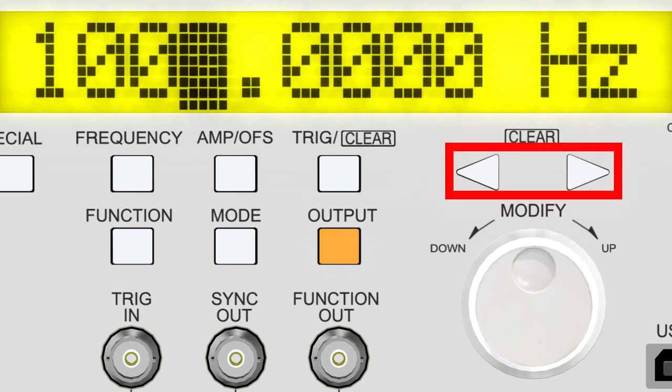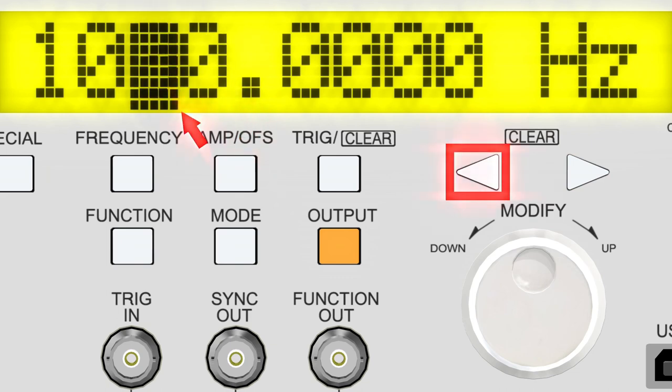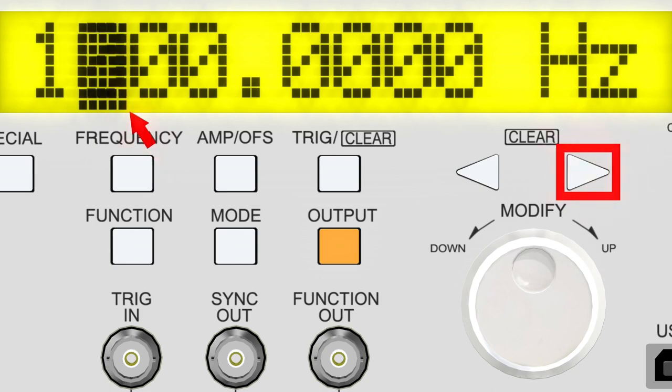Press the arrow keys to bring the cursor to the digit you want to change. Currently, the cursor is in the first place. Pressing the left arrow key once will move the cursor to the tenth place, and pressing the left arrow key once more will move the cursor to the hundredth place. Pressing the right arrow key moves the cursor down to the tenth place, then to the first place, then to the first decimal place, and so on.